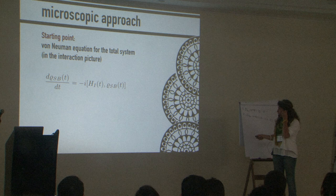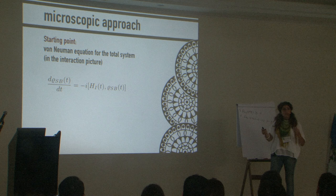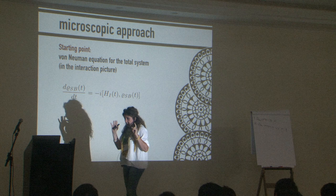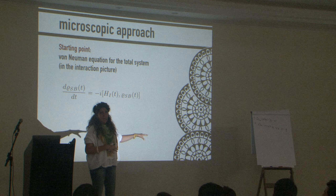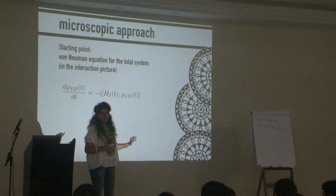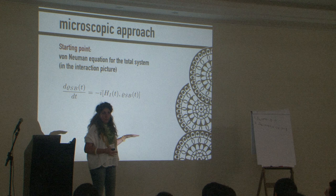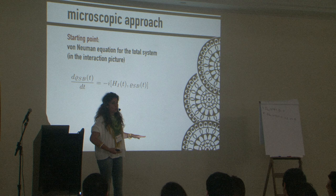What I want to do is show you the steps and the main approximations. I will not do the full microscopic derivation here — just some of the main steps — because we don't have enough time. But I want to recall what we are actually doing in order to derive an equation of motion for the open system from a total microscopic description of system and bath.